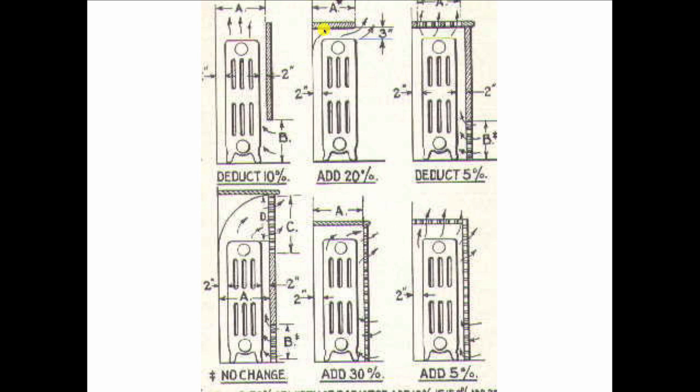So if we do something as simple as put a shelf over the top of a radiator, that stops the convective air from moving in. It bumps into the shelf. And it says here that you would have to add 20% to the size of the radiator to get the same output that you would have if that cover were not there.